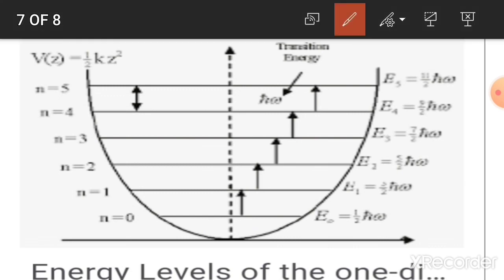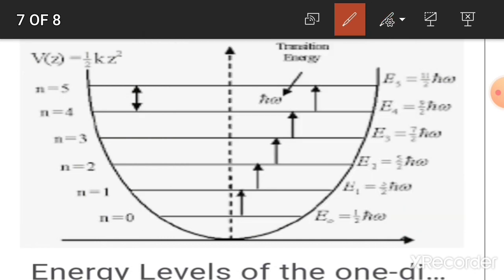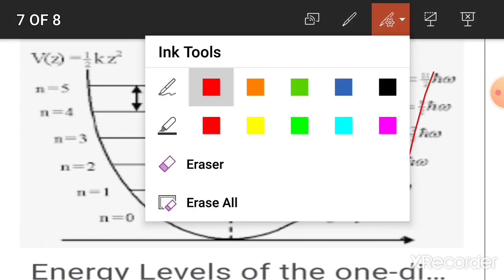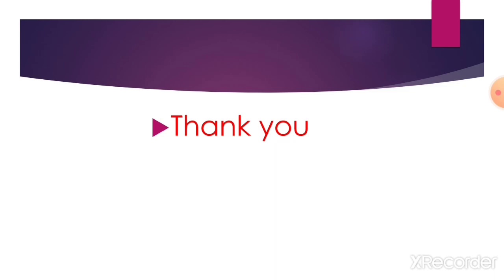In this spectroscopy, the selection rule is delta v equals plus minus 1. This allows absorption and emission. When molecules go from second to third, fourth and higher levels, the force constant changes. In such cases, we consider an anharmonic oscillator instead of the simple harmonic oscillator. Thank you.